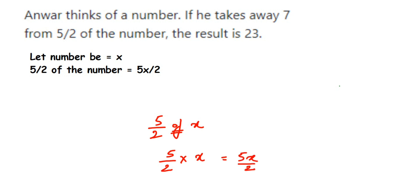So 5 upon 2 of a number will become 5x upon 2. Now we have got everything and we're going to form an equation. If he takes away 7 from 5 upon 2 of a number, so he is removing 7. So it will become 5x upon 2, from this he is removing 7.